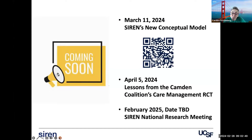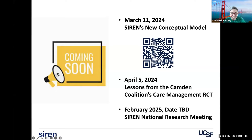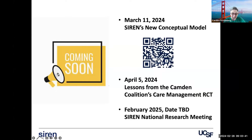Before we delve into today's content, we want to give you a preview of some of our future events. On March 11th, we'll have another webinar about SIREN's new conceptual model — the QR code will take you to the registration page. In April, we'll have a webinar about lessons from the Camden Coalition's Care Management RCT. And we want to announce that in February of 2025, we'll be holding the next SIREN National Research Meeting. We're grateful to Kaiser Permanente for their support, and we're looking for additional sponsors.